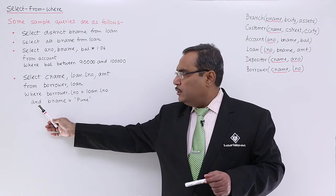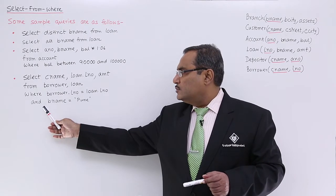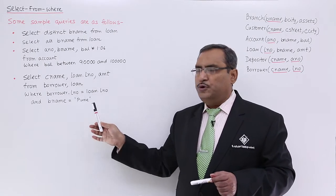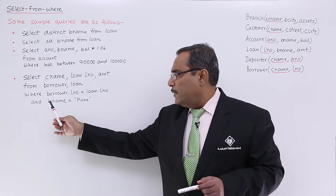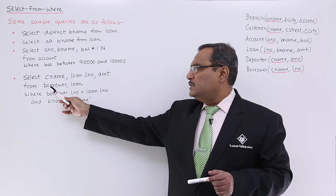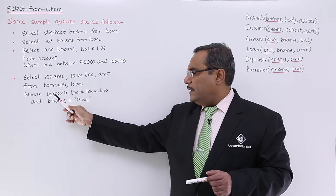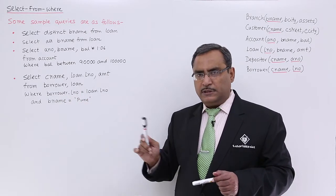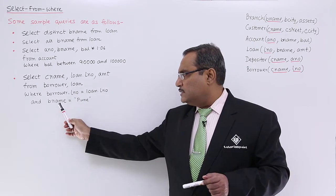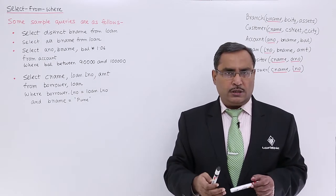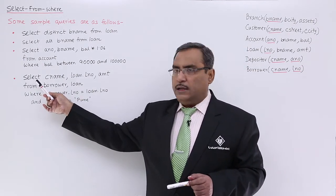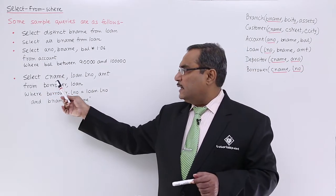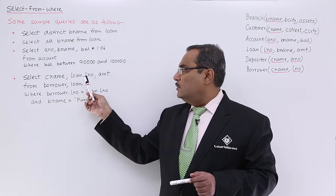Also, we are attaching another condition using AND. That is branch name is equal to PUNE. Here we are looking for the PUNE branch only. This is our Cartesian product and here we are getting only the feasible tuples where the loan numbers are same and branch name equals PUNE is another condition we are including in the predicate.